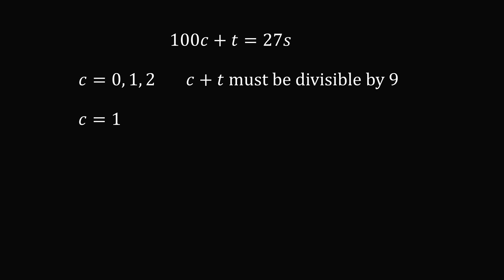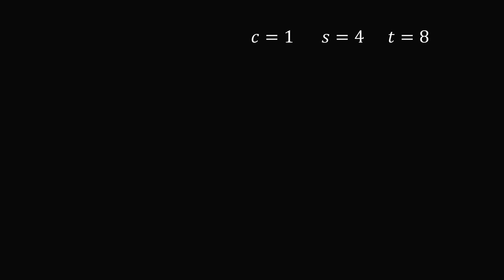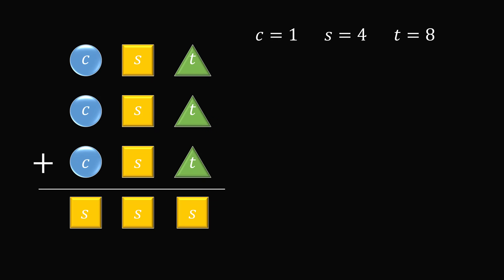We are left with only one possibility: C equals 1. Since C plus T must be divisible by 9, T equals 8. Then 100C plus T equals 108. Dividing by 27 gives the whole number 4, so S equals 4. We have found a unique solution: C equals 1, T equals 8, S equals 4. Checking against the original problem: 148 plus 148 plus 148 equals 444. And that's the answer.